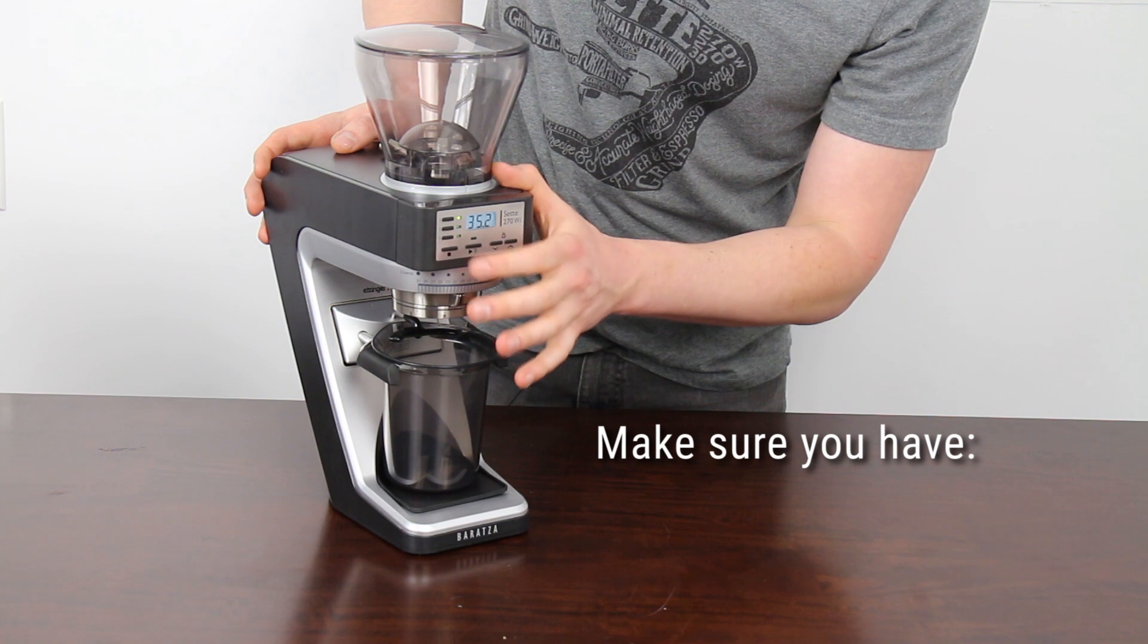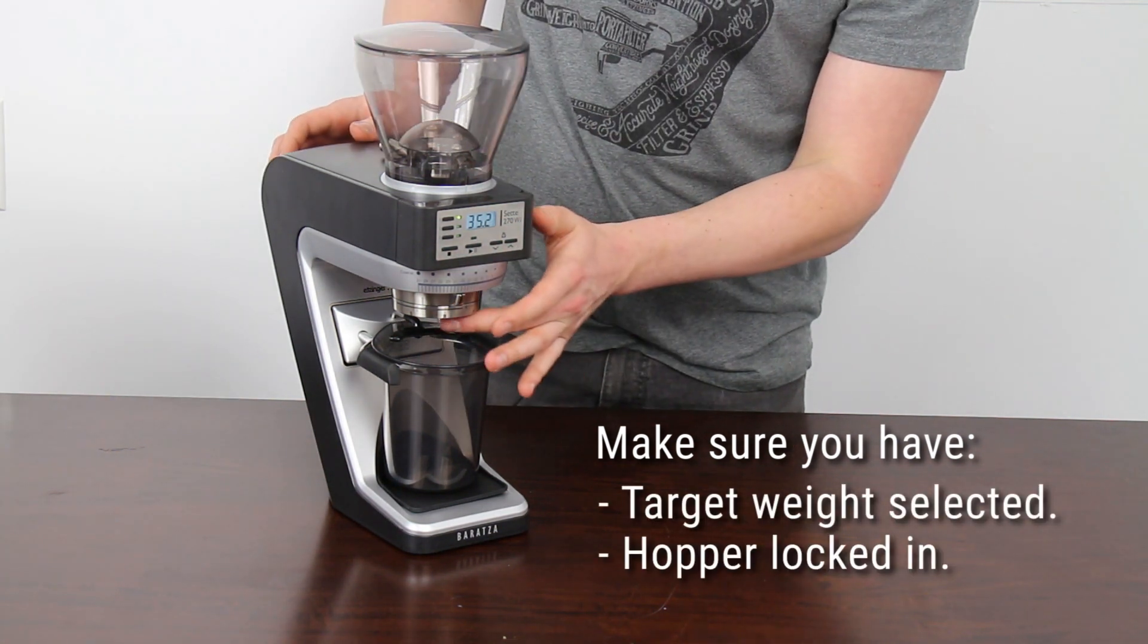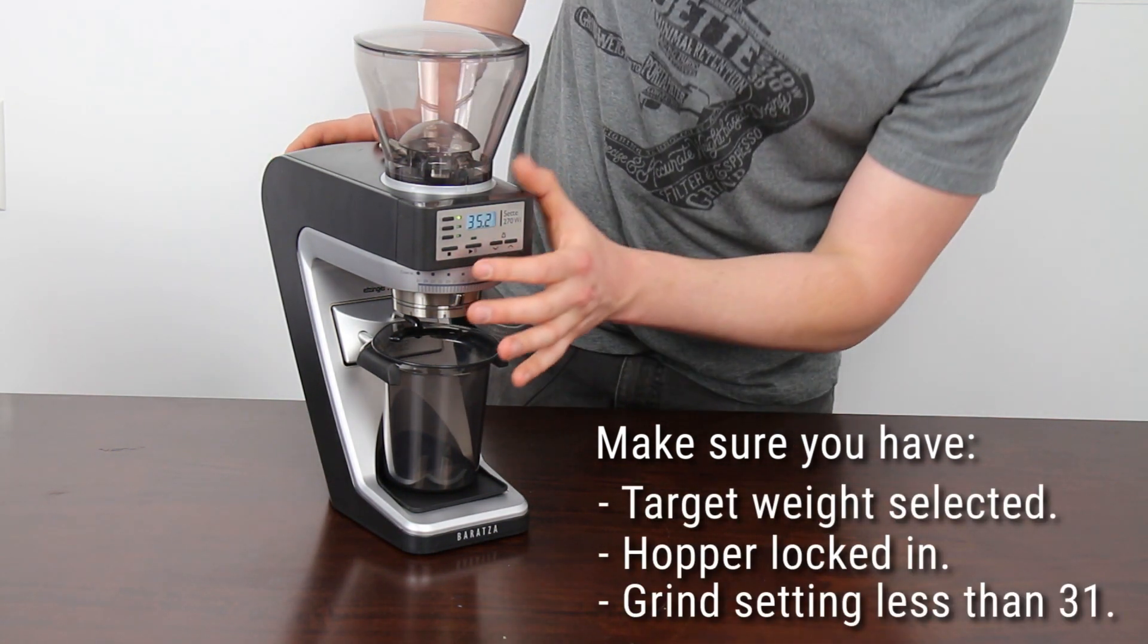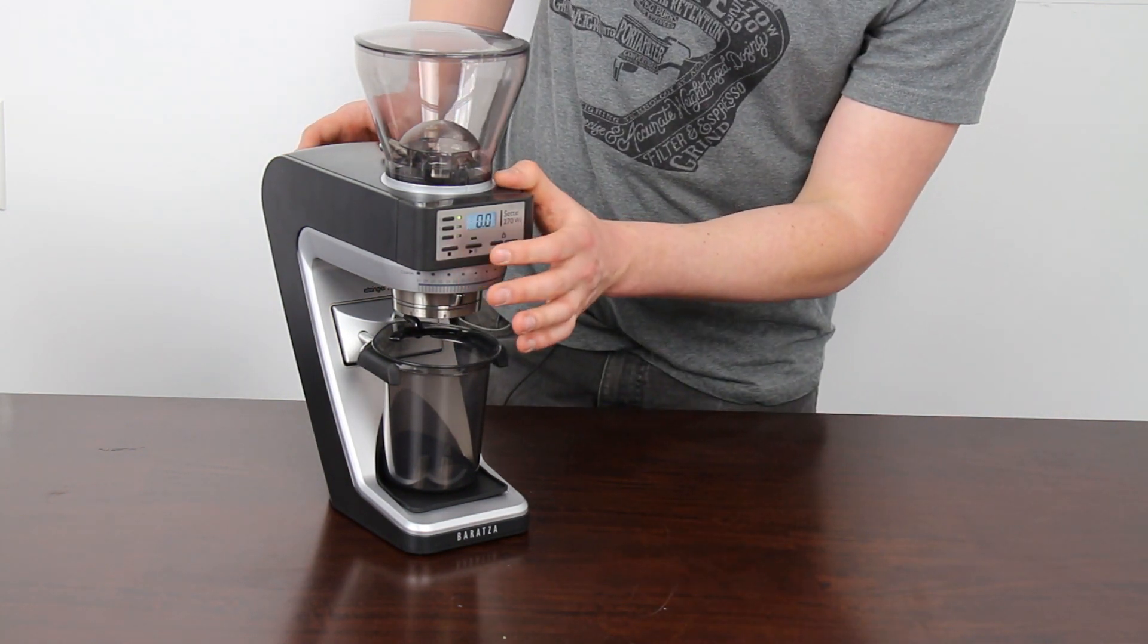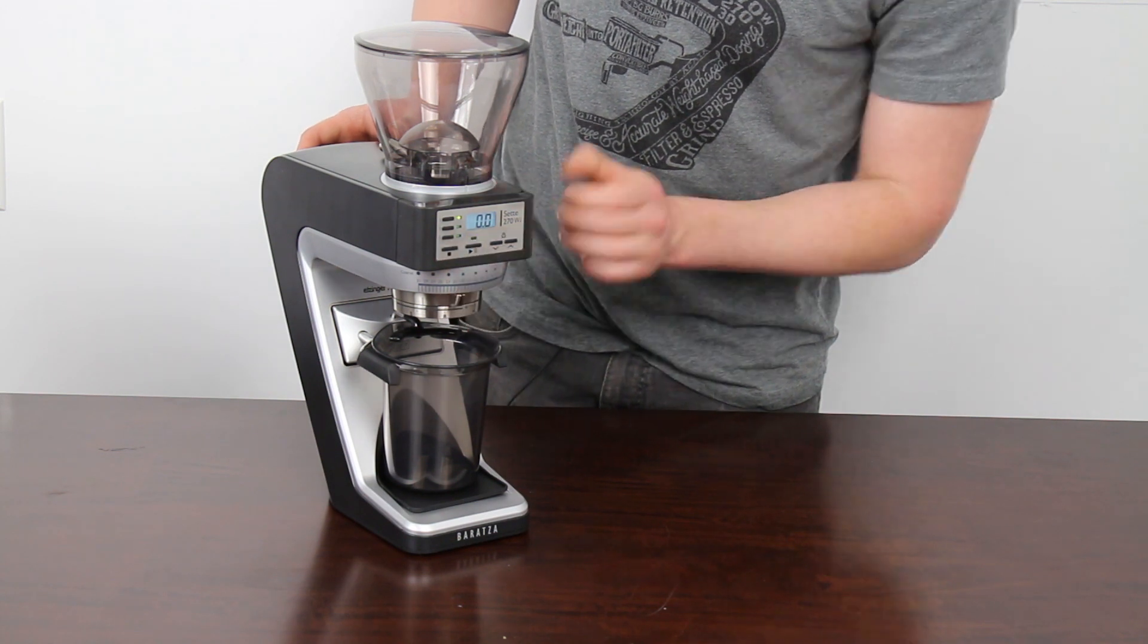Once you have your grind setting selected, your hopper locked in and a grind setting chosen, all you have to do is press play to turn it on. To turn the motor off you need to either press the pause button or the stop button.